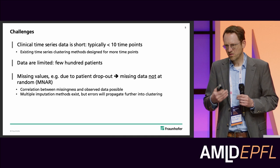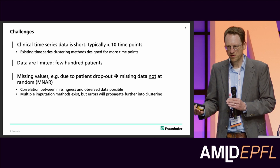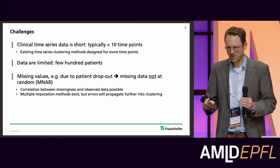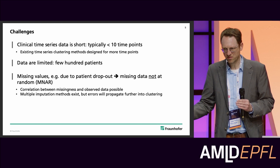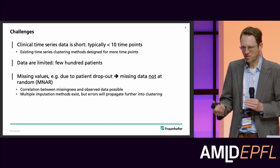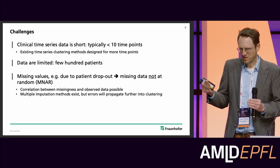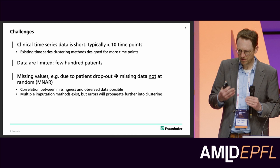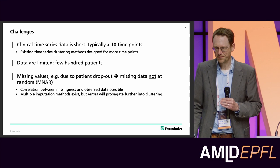A third challenge is missing data. When looking at patients in studies over time, you typically observe that patients drop out at some point. This dropping out can itself be correlated to disease symptom worsening, with the patient intentionally deciding to leave the study. So missing data in clinical studies is oftentimes not at random — there is a possible correlation between missingness and observed data. Multiple imputation methods have been around for a long time, but any imputation method will induce errors, and these errors will be propagated into any subsequent clustering.